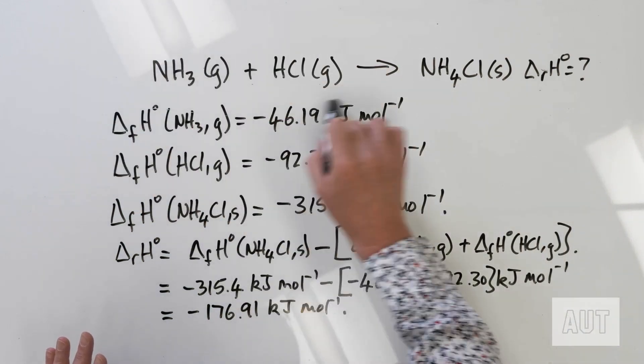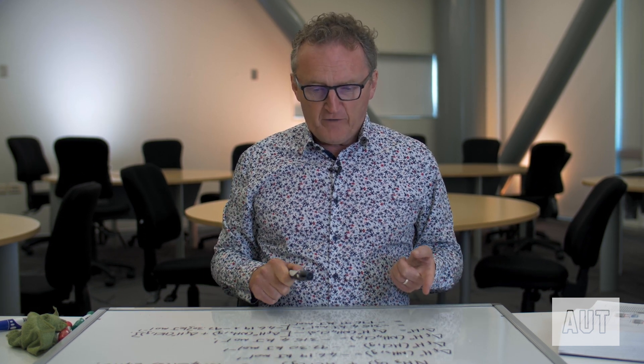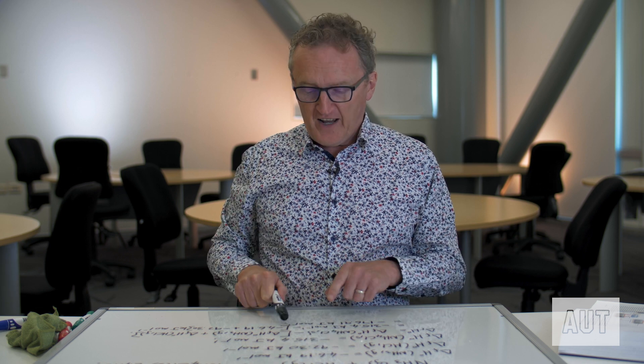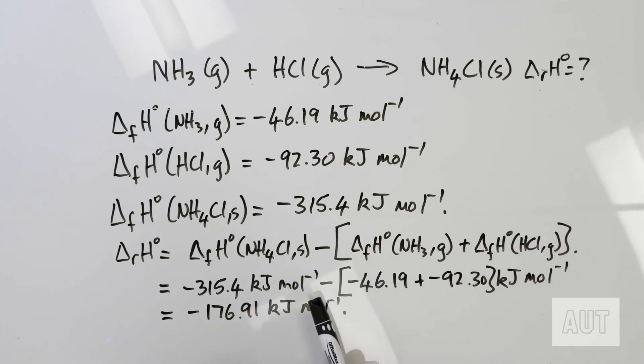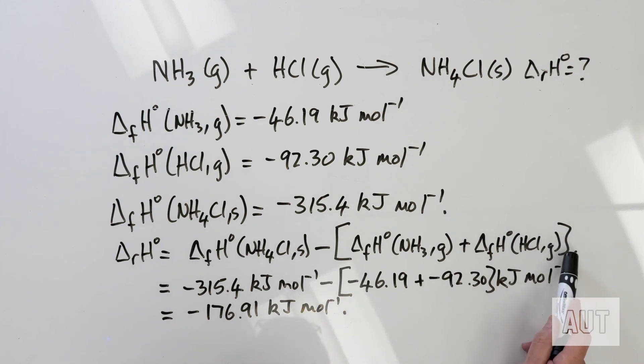Where can you go wrong on these? Well, if you forget which way around to do things, you'll go wrong. Remember, it's always products minus reactants — sum up all of your products and take away the sum of the reactants. The easy place to go wrong is where you've got all of these negative signs, and in your equation you're subtracting off negatives. You've got to remember to use brackets here and keep track of your negative signs — that's probably the most obvious place to go wrong in calculations like this.